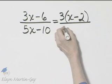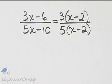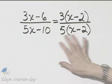In the denominator there's a common factor of five. When I factor it out I'll have x minus two. Once again I factored. I wrote as a product.